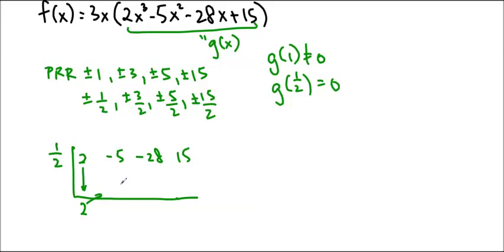So I'll do a quick reminder of how to do it. So multiply this by 1/2, 1, add these together, multiply by 1/2 again, we get negative 2, add them, it's negative 30. Multiply by 1/2 one more time, we get negative 15, add them together, it's 0. We do want a remainder of 0, so that's good.